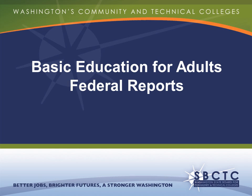Before we get started with this brief presentation, it may be helpful if you have a copy of your federal report found in OGMS from last year. This report complies with the year-end reporting requirements for adult and family literacy programs, and they are necessary for our office to fulfill the National Reporting System requirements.